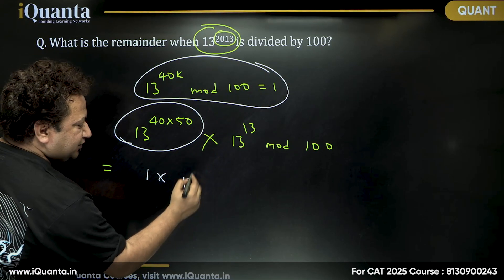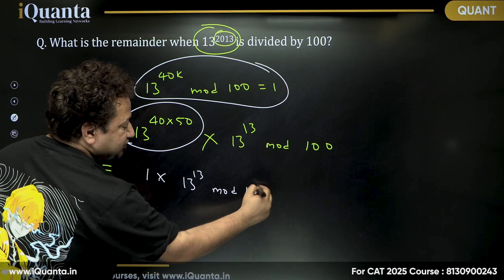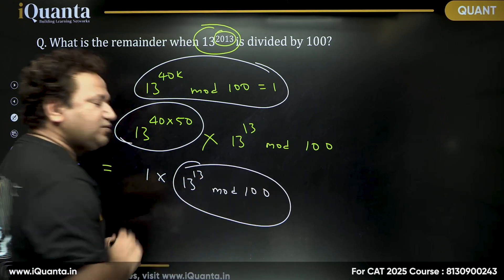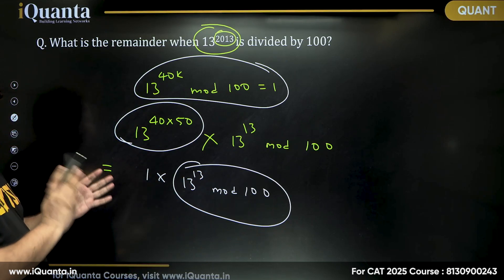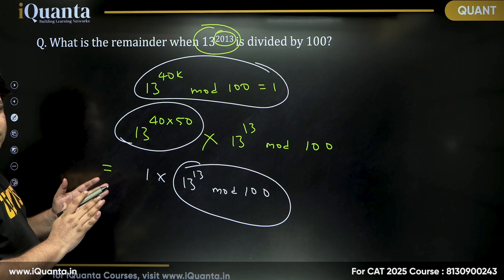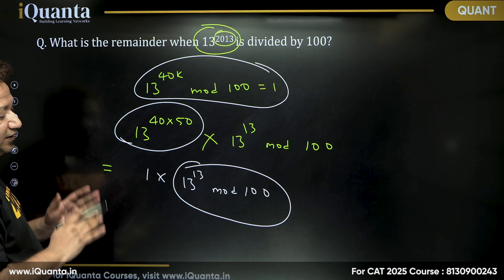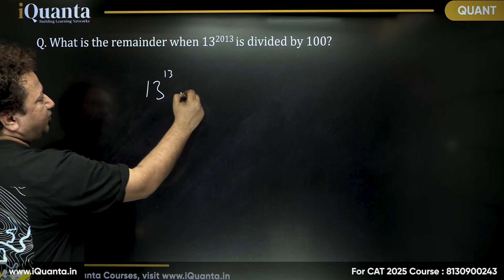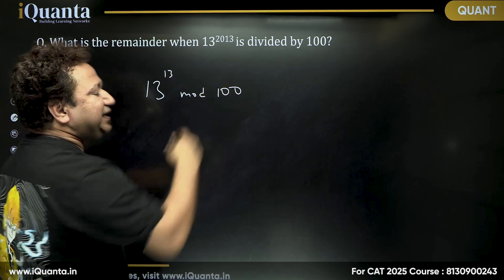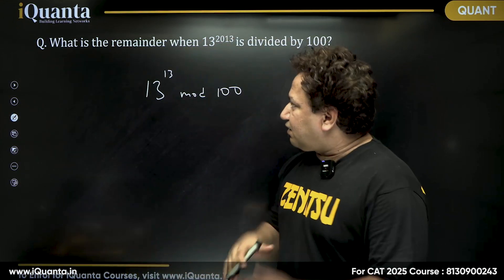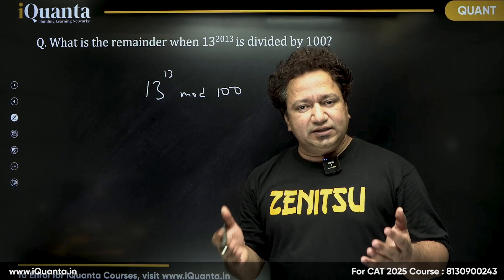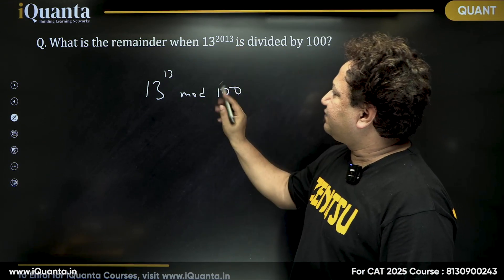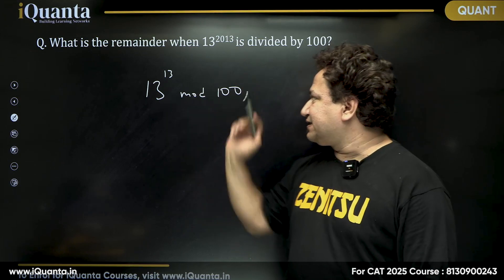Euler's theorem reduces the calculation, and now the main calculation we need to do is 13^13 mod 100. Once you practice questions on this theorem, it becomes automatic in your mind — divide the exponent by 40, the remainder is 13, and the very first step you write is 13^13 mod 100.